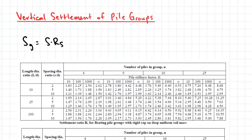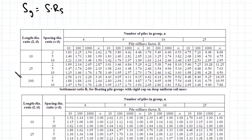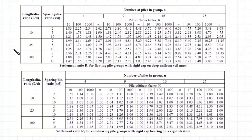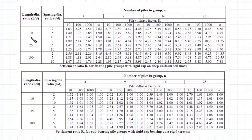The vertical settlement of pile groups is taken to be the product of the vertical settlement of a single pile with a ratio RS, which can be found from one of the tables below. The top table is used for floating pile groups, and the bottom table is used for end bearing pile groups.